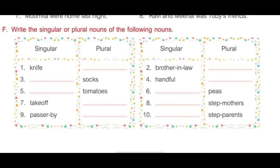Question 6 — plural peas is given, so we write the singular: pea (P-E-A). Question 7 — singular given: take-off, so the plural will be take-offs (T-A-K-E-O-F-F-S). Question 8 — plural stepmothers is given, so the singular will be stepmother (S-T-E-P-M-O-T-H-E-R). Question 9 — singular given, so the plural will be passersby (P-A-S-S-E-R-S-B-Y).